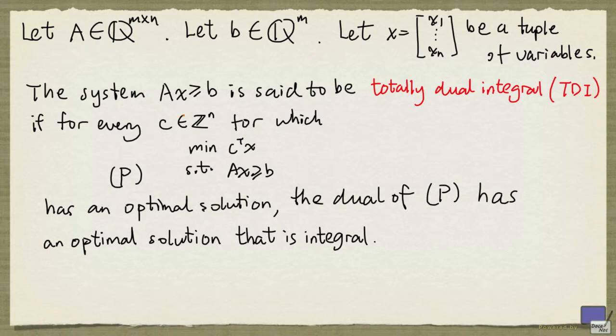We say that the system Ax greater than or equal to b is totally dual integral, or TDI for short, if for every n-tuple c with integer entries for which the problem minimizing c transpose x subject to Ax greater than or equal to b has an optimal solution, the dual problem has an optimal solution that is integral.